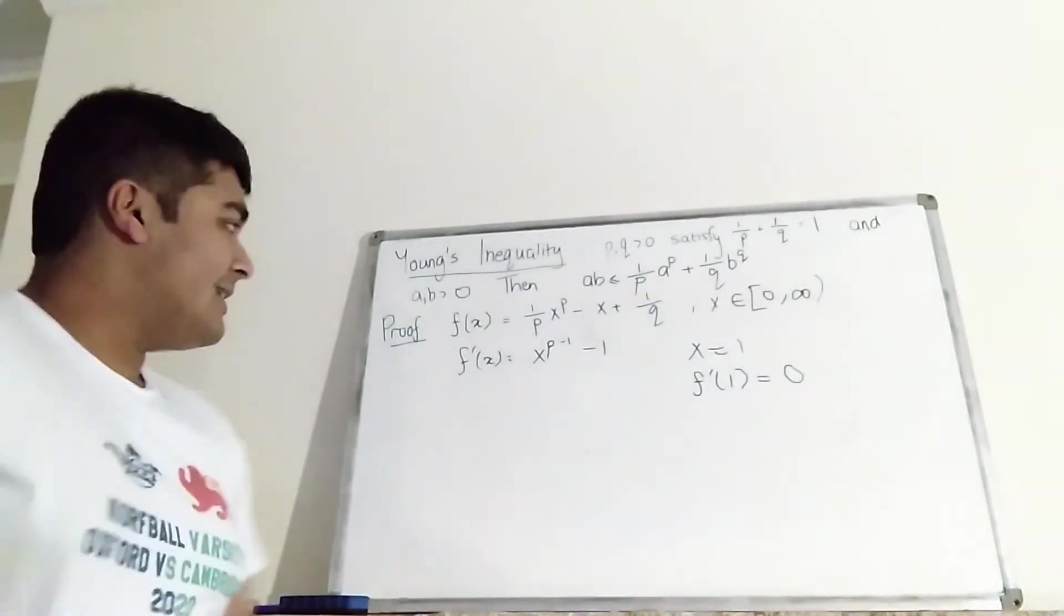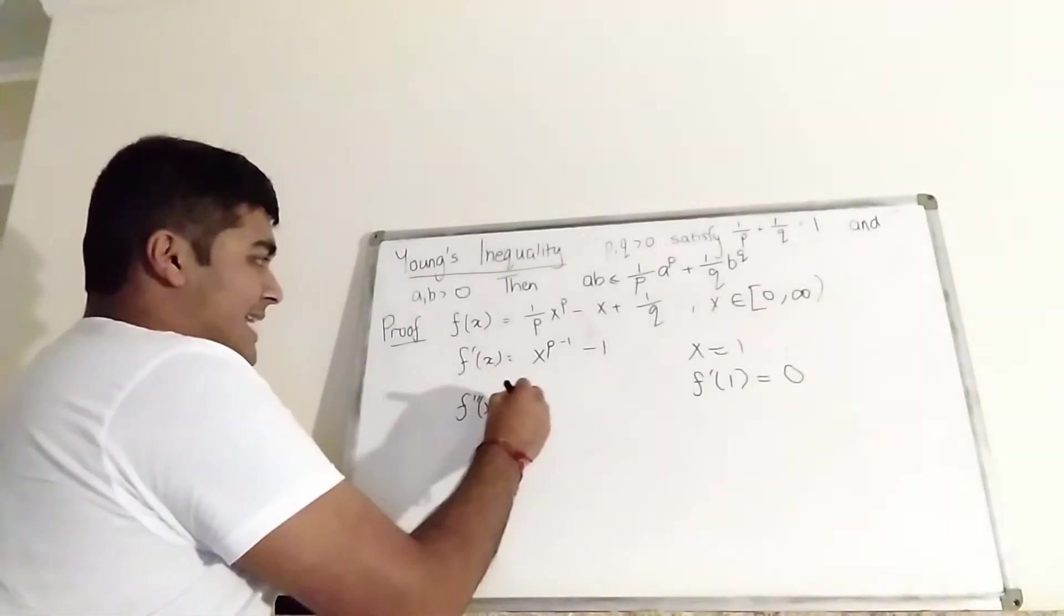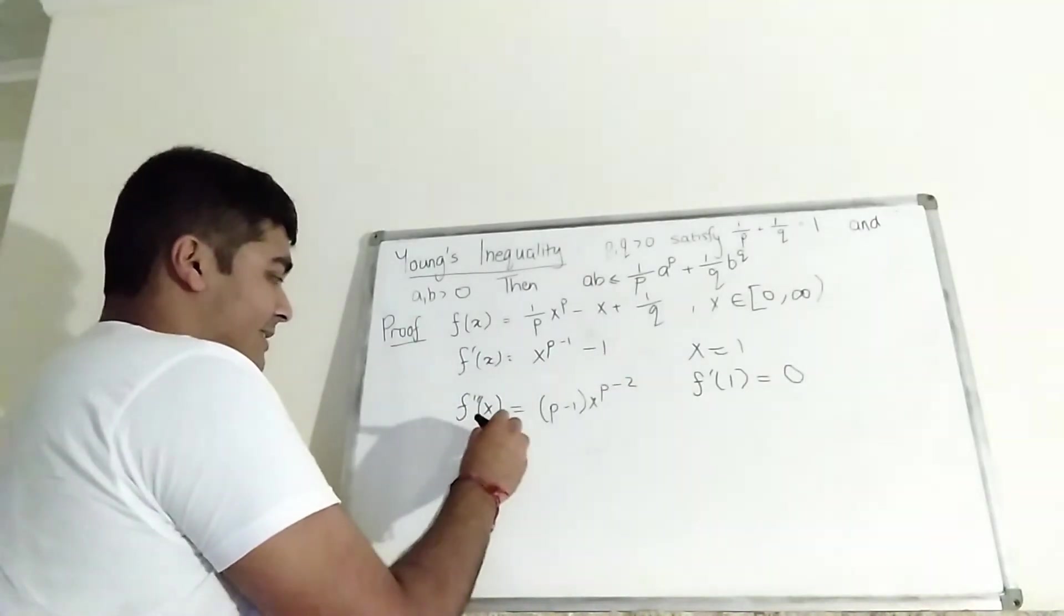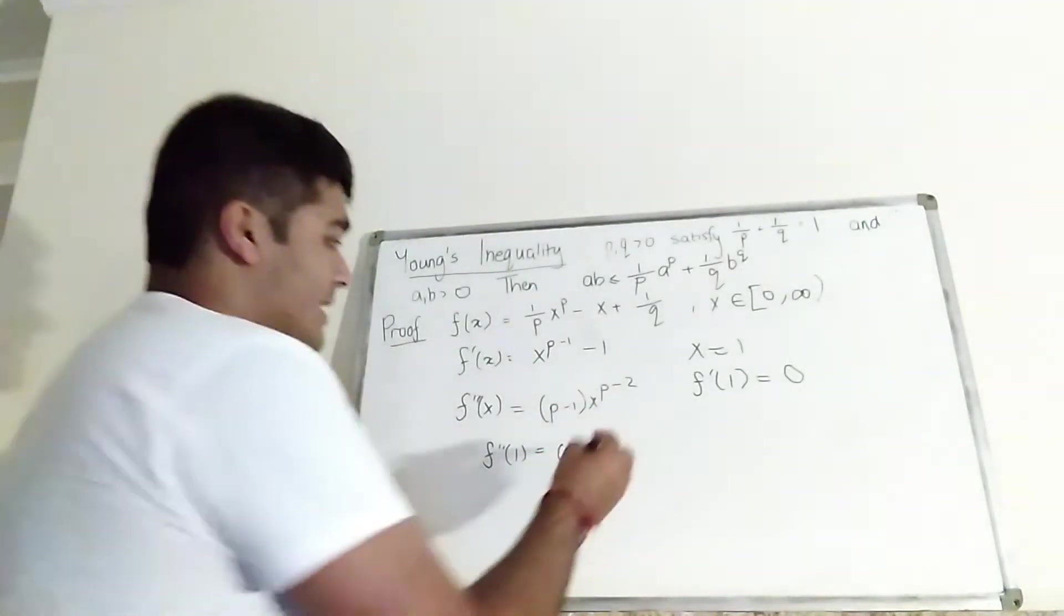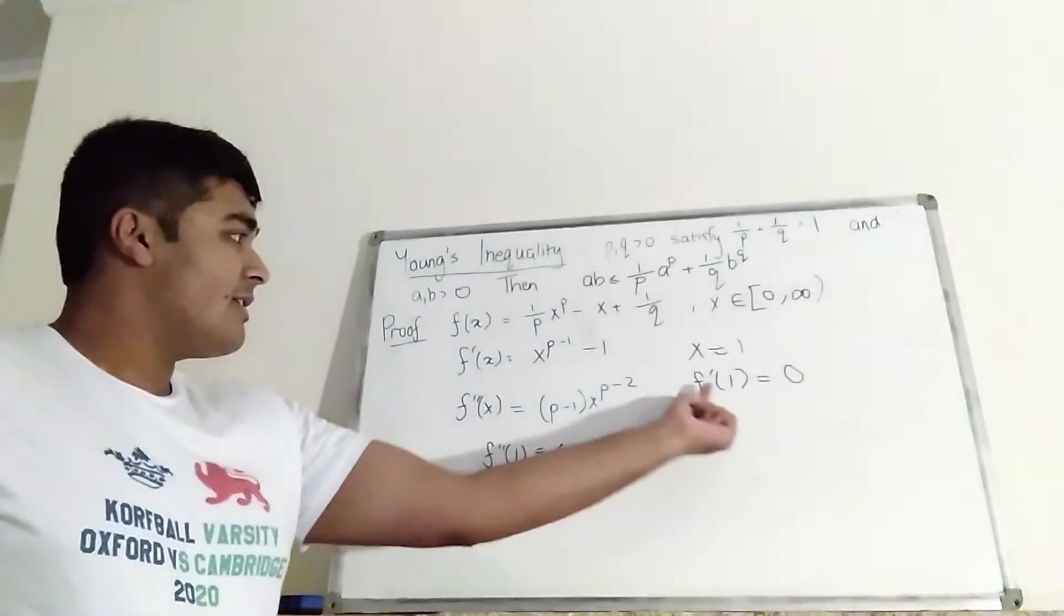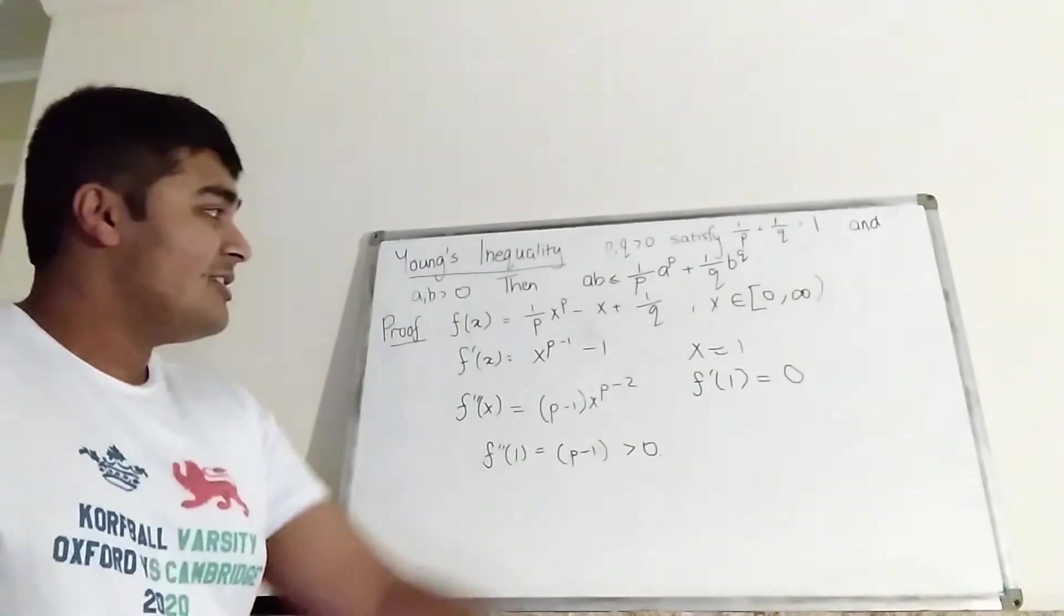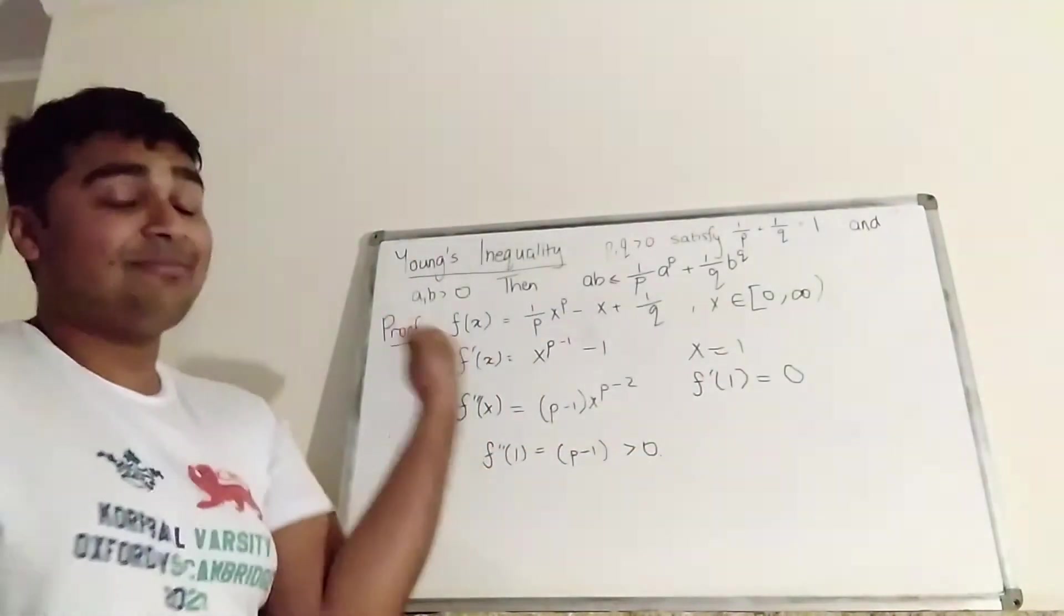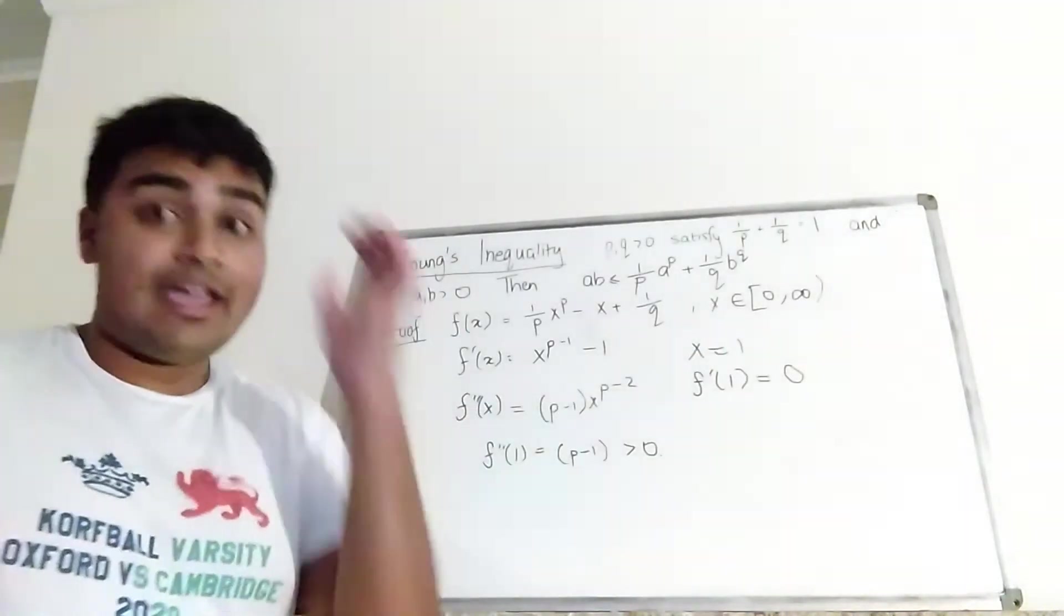Okay, now let's consider the second derivative of f. And we're going to look at it at x equals 1. So the second derivative is just P minus 1 times x to the P minus 2. But in particular, the second derivative at 1 is just P minus 1. Okay, and remember P is bigger than 1, so this thing here is positive. So that tells us that at x equals 1, we have a minimum turning point. Okay, so that means that every non-negative x value is at least this thing here, at least f of 1.